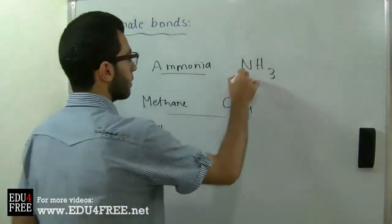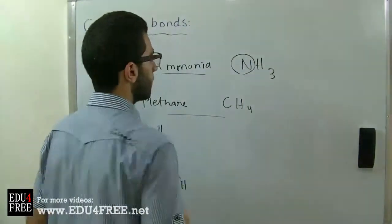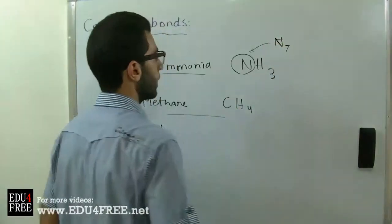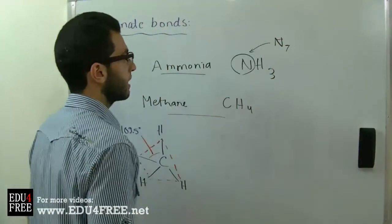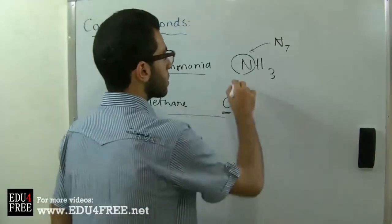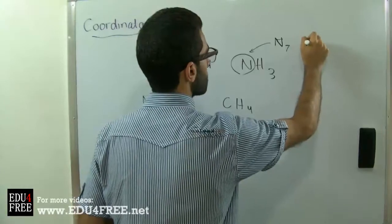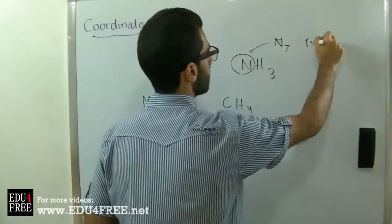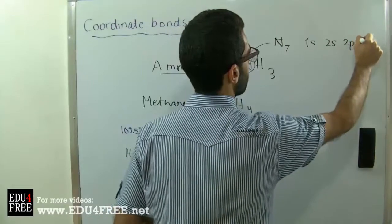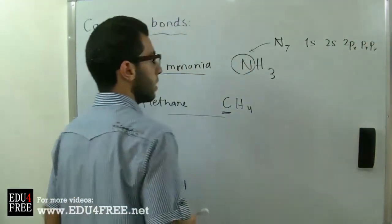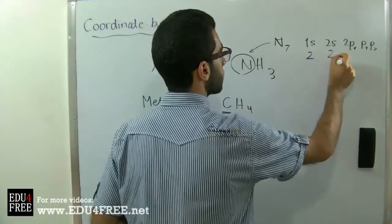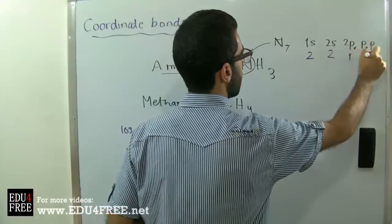Now let's have a look at the structure of ammonia. First, nitrogen. The electronic configuration of nitrogen is N7. It contains an extra electron more than carbon. So nitrogen contains these orbitals: the 1s, the 2s, and the 2px, py, and pz. So here we have two electrons, two electrons, and one, one, one.